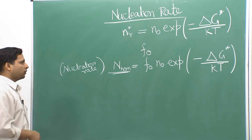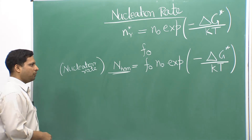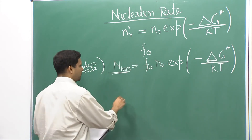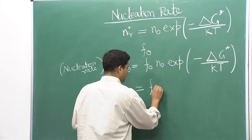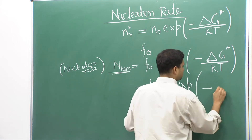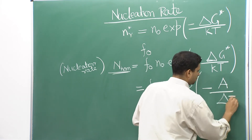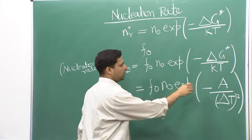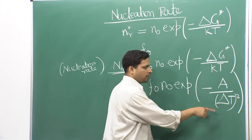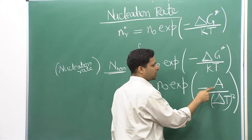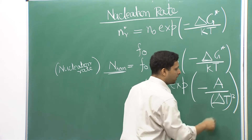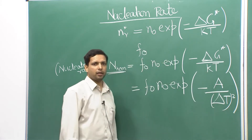This rate of homogeneous nucleation can be rewritten if we expand the terms of ΔG*. ΔG* was inversely proportional to ΔT squared, so we have changed ΔG* into a term A divided by ΔT². A also contains the 1/kT term.